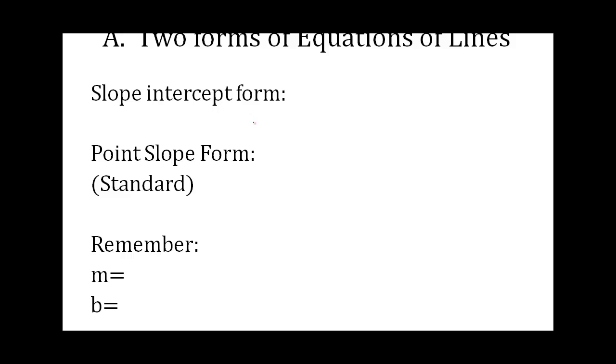First there's two forms of the equation of a line. First is the slope-intercept form, which you may recall as y equals mx plus b. b, if you remember, is your y-intercept.